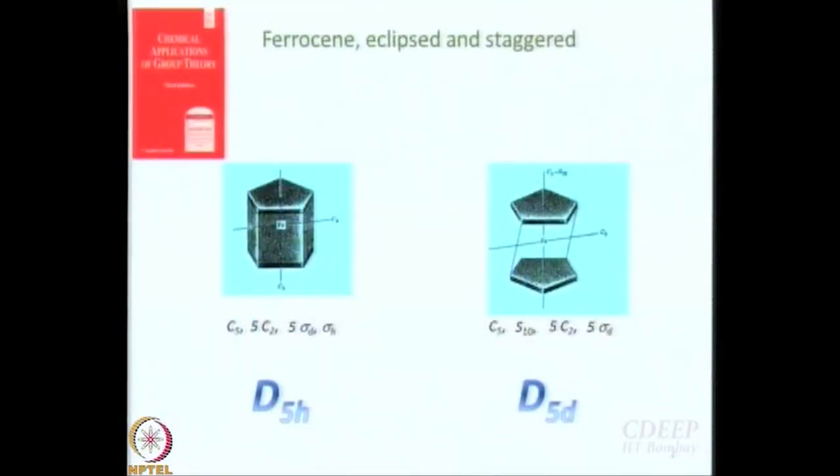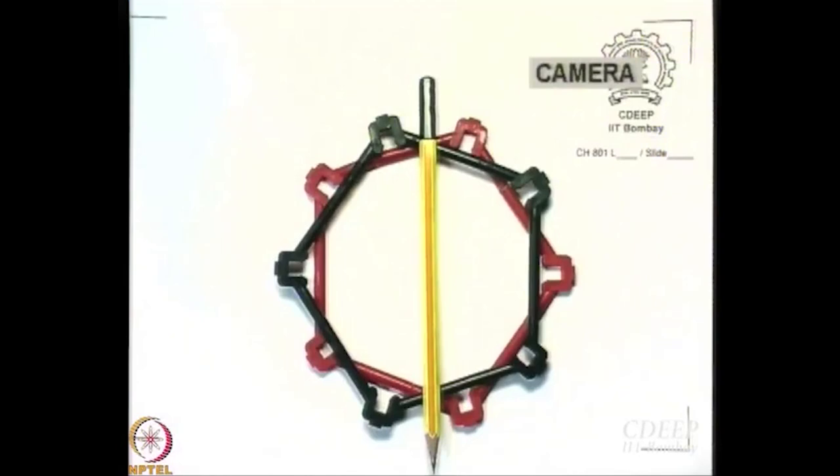In fact, even I forgot to write the I here. So the point group is D5D — it is not D5H anymore. By twisting, you have destroyed some symmetry because sigma H is gone. So it goes from D5H to D5D point group. Ferrocene, I hope, is clear. Can you make out the colours? Black and red.